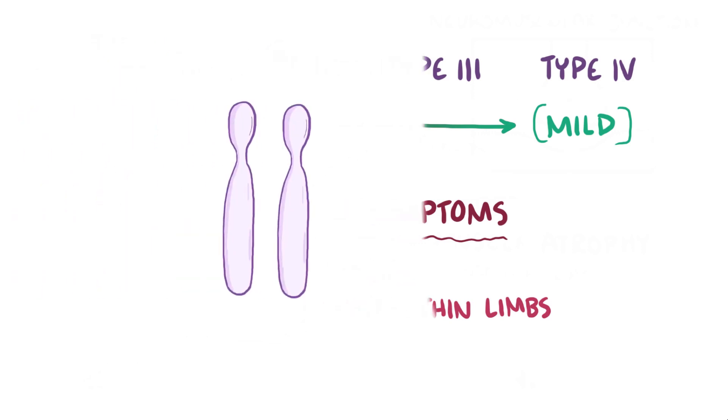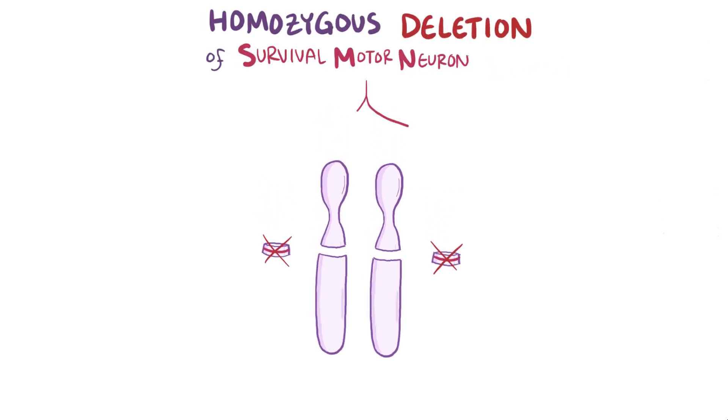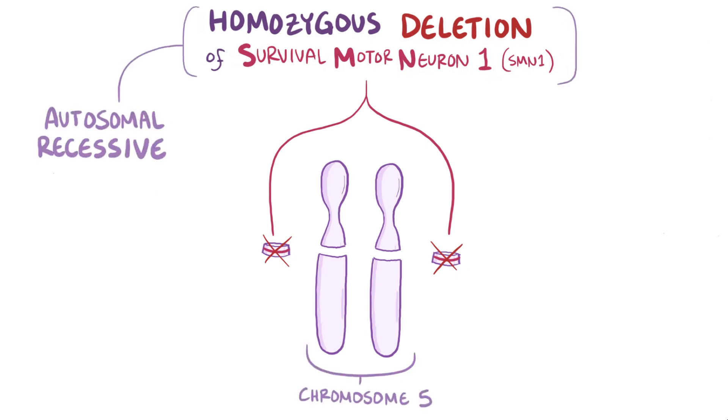The different types of SMA all result from the same homozygous deletion of the survival motor neuron 1 gene, or SMN1 gene, on chromosome 5, and this is inherited in an autosomal recessive pattern.